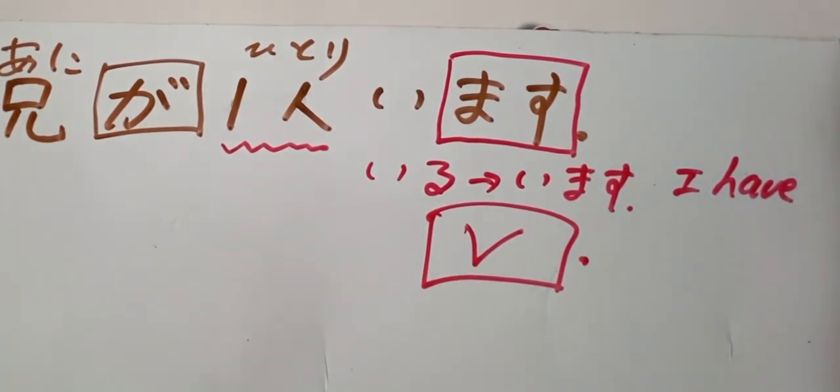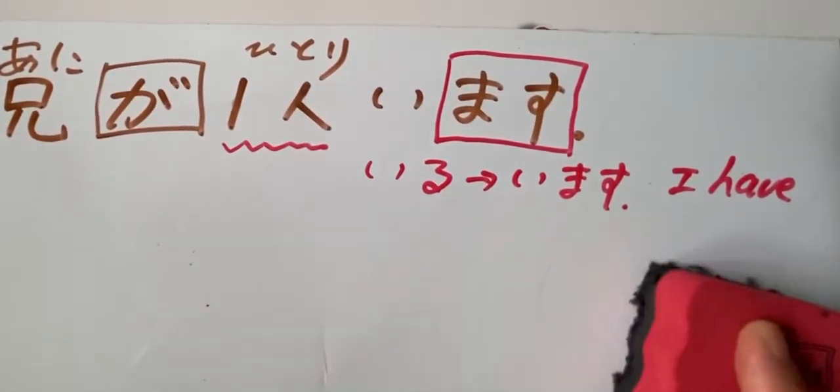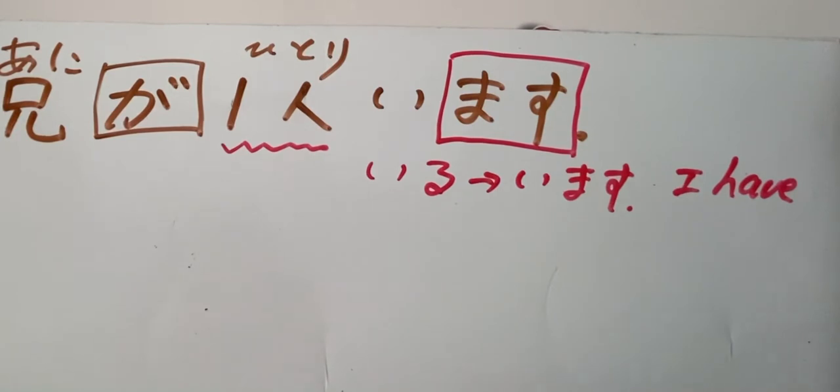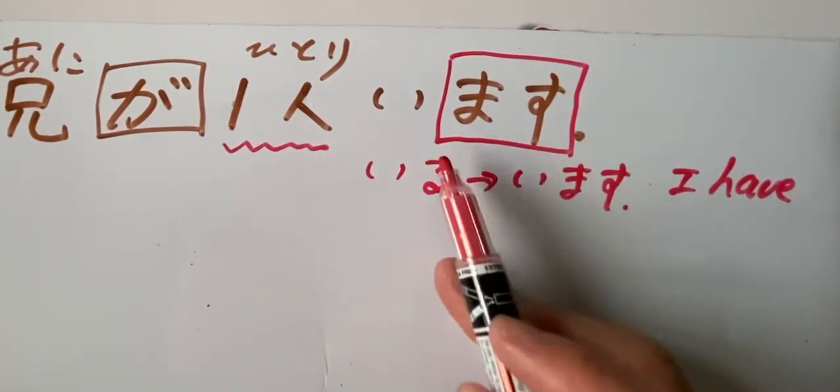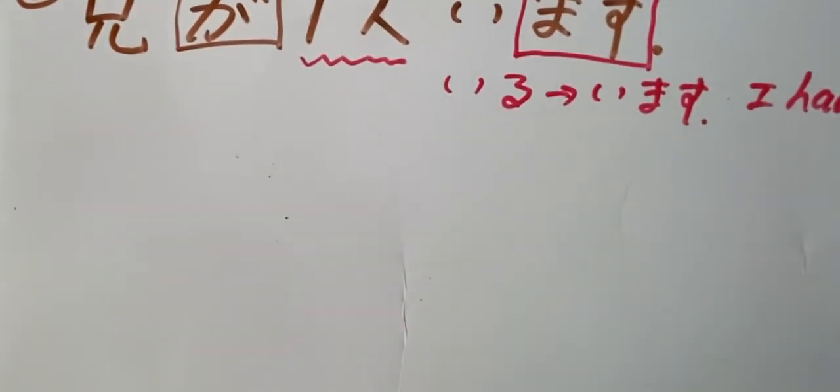It is different from English. All right. Okay. Ani ga hitori imasu. I have one older brother. Ani ga hitori imasu. Ne. Imasu. All right. Okay. Just now we have learned the verb au.